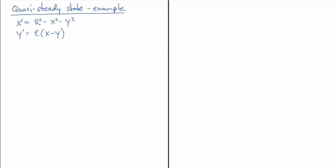Here I've got the equation x' = r² - x² - y², and y' = ε(x - y). We're going to assume that epsilon is a positive parameter, but much smaller than 1. Because of that, as long as x minus y is not really large, y is going to be a slow-changing variable.